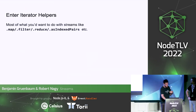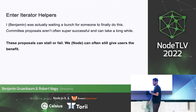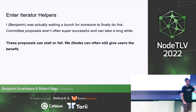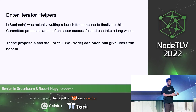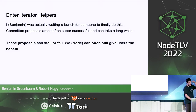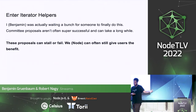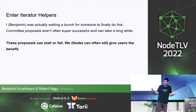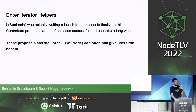The iterator helpers proposal adds dot-map, dot-filter, dot-reduce, and basically everything you'd expect — including dot-find and others. I was waiting for a long time for someone to do this because I strongly believe this is the API people actually want. The proposal is at stage two — it can still rise or fall — but I'm very optimistic it will make it. And regardless of the proposal, Node can still ship this API and give users what they want.